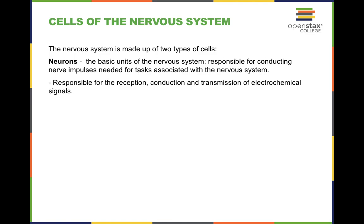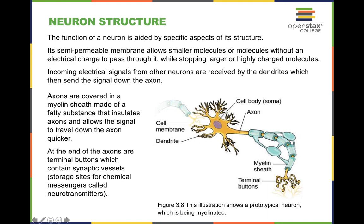There are some structures to really hyper-focus on. The first are these tree branch-like structures known as dendrites, which are responsible for receiving information. They send that information across the soma, or cell body. That purple-like structure is your nucleus. Information is then sent down the axon and ends up at the terminal buttons. This protective layer that looks a little translucent is known as the myelin sheath, which allows information to travel across the neuron more smoothly.